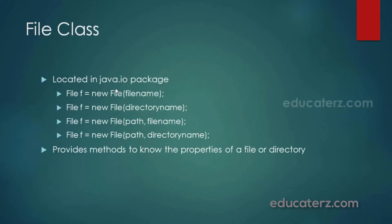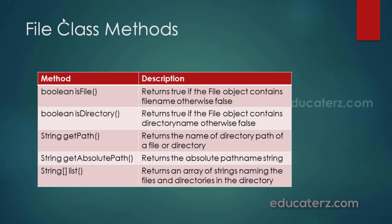Next is the File class, basically located in the java.io package. We use this class to know the properties of a file or a directory. The File class provides methods like isFile(), isDirectory() — isFile() returns true if the file object contains a file name, otherwise false; isDirectory() returns true if it contains a directory name, otherwise false. To know the path we use getPath(); absolutePath gives the path from the root. The list() method returns a string array containing all file names and directory names.